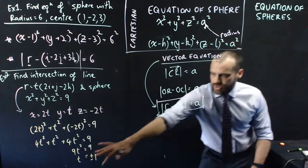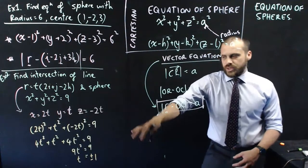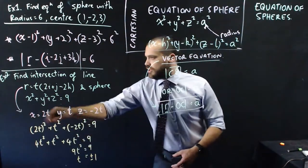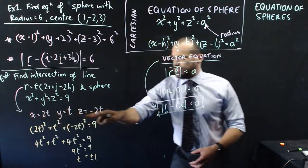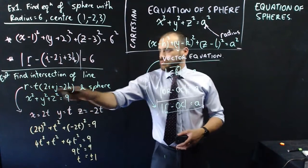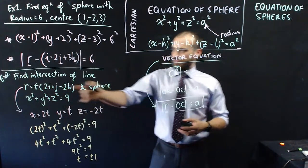Now that you know that t equals plus or minus 1, you can sub plus 1 and minus 1 into either our parametric equations to get x, y, and z values, or just straight into this one here. I think it's going to be easier if I just sub it into that.